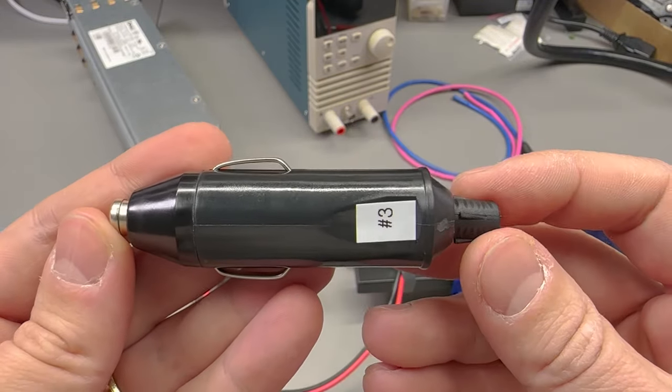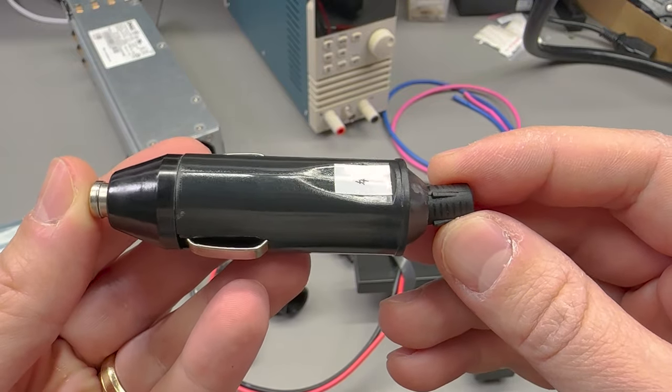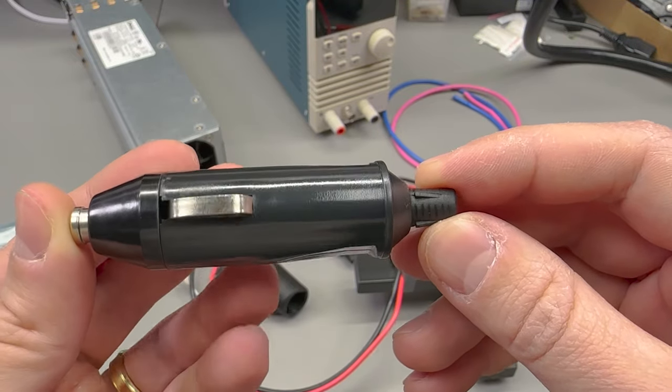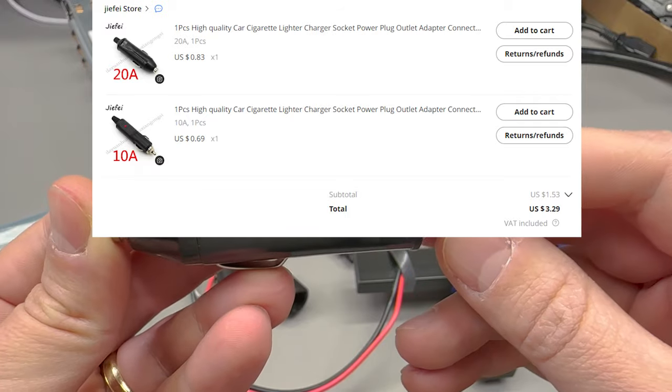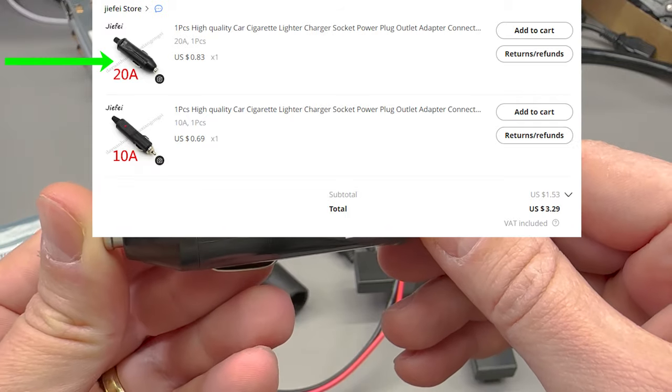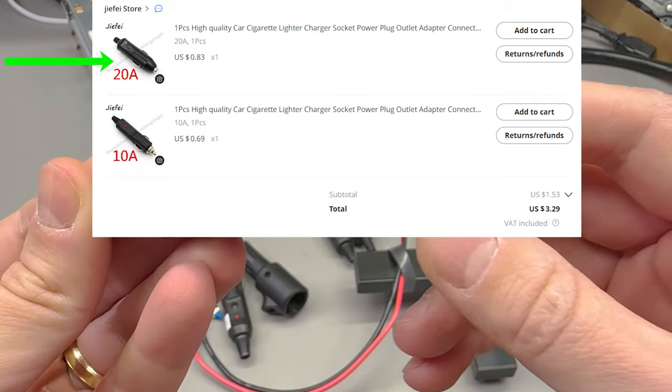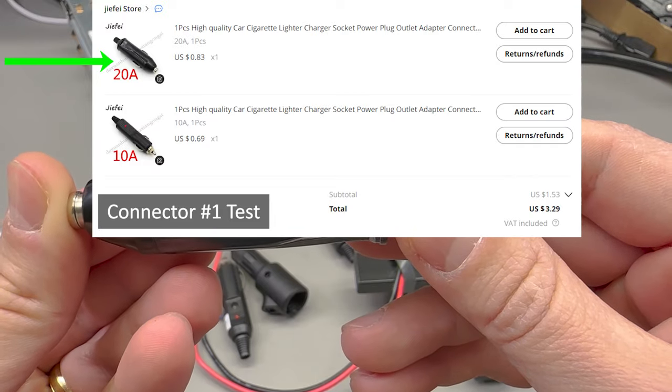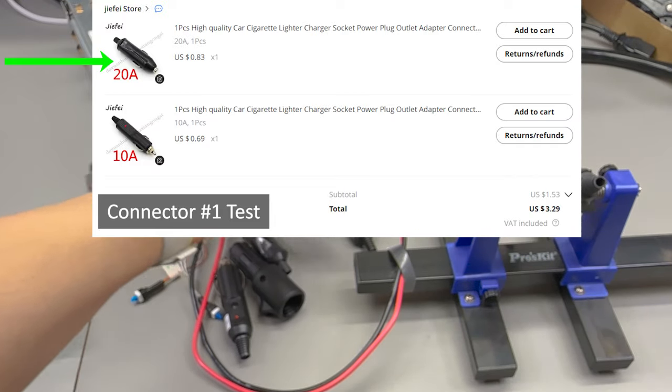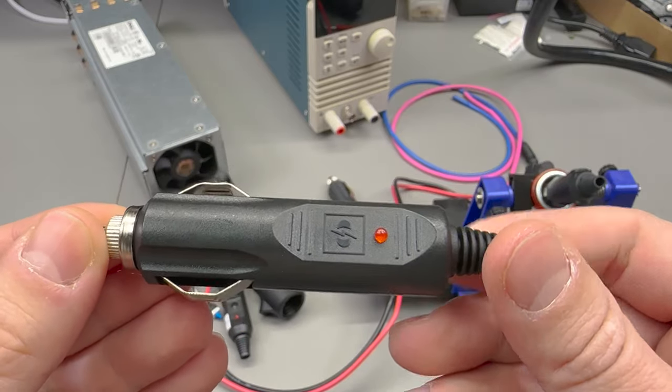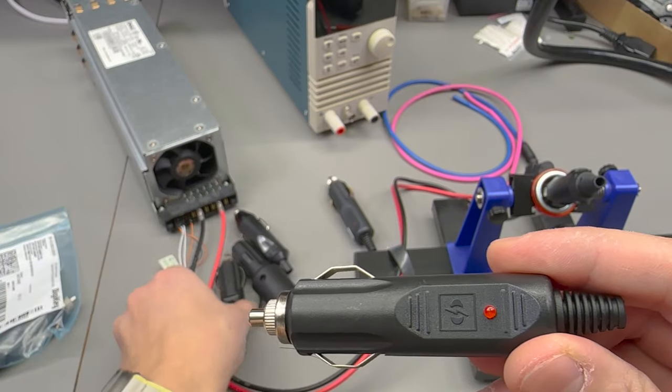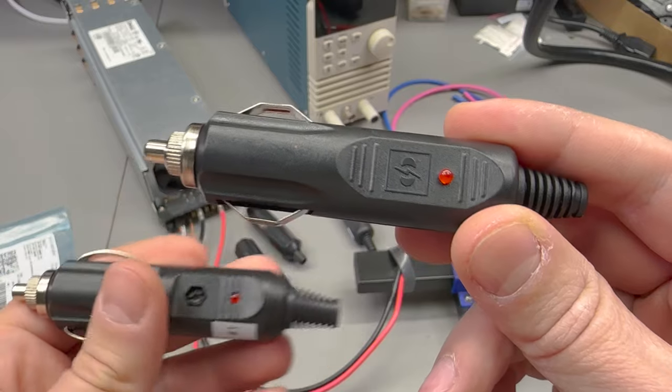Connector number three is this one which I got in 2023 for about 70 cents. It's labeled as a high quality car cigarette lighter charger socket power plug, and this one is rated for 10 amps.